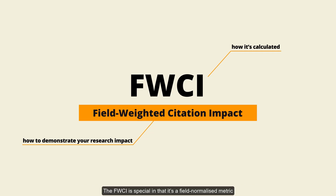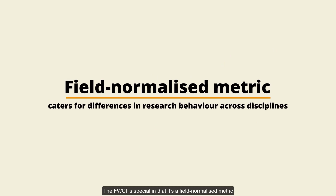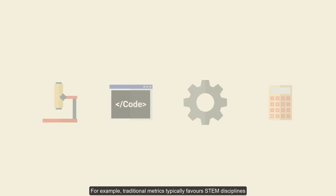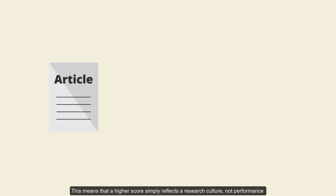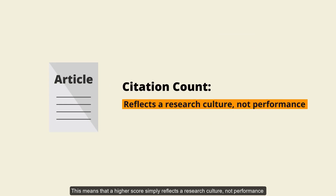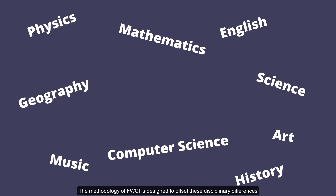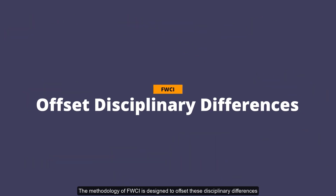The FWCI is special in that it's a field-normalized metric, meaning that it caters for differences in research behavior across disciplines. For example, traditional metrics typically favor STEM disciplines simply because shorter articles are produced more frequently. This means that a higher score simply reflects a research culture, not performance. The methodology of the FWCI is designed to offset these disciplinary differences and is considered a better performance indicator than raw citation counts.